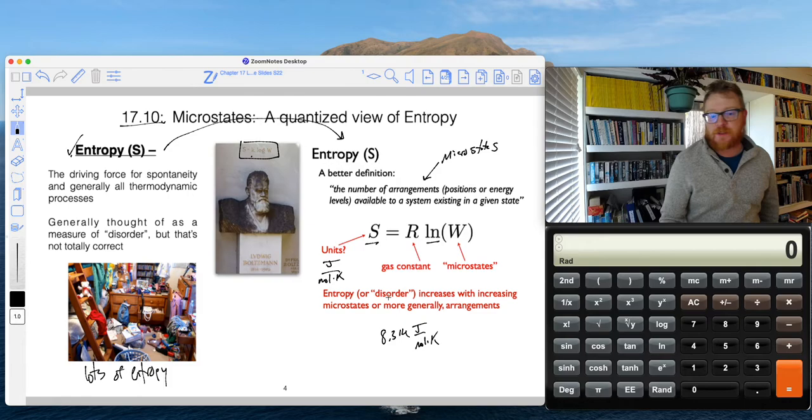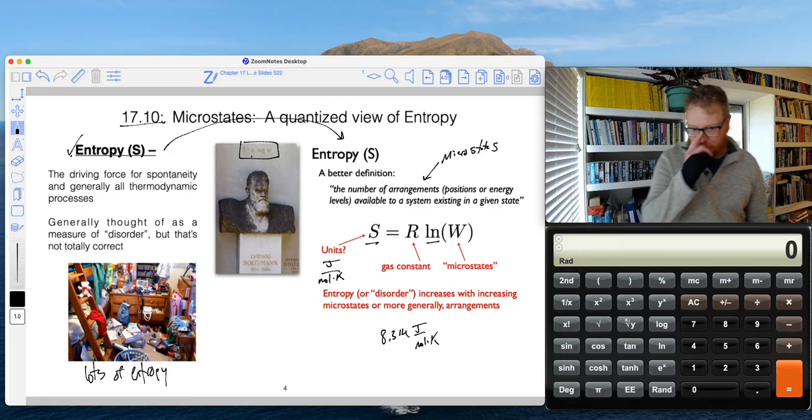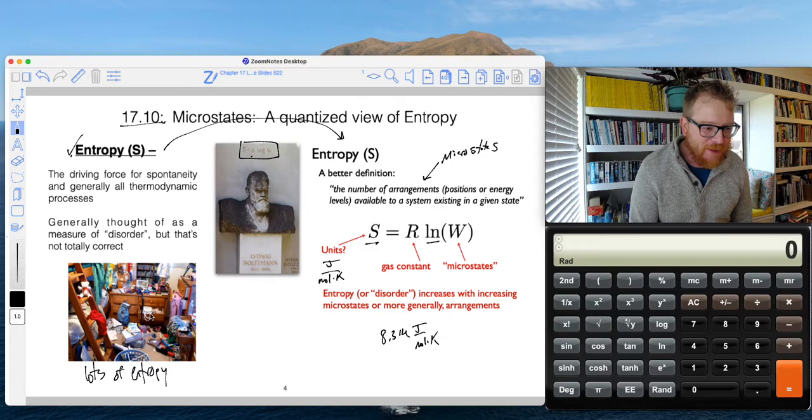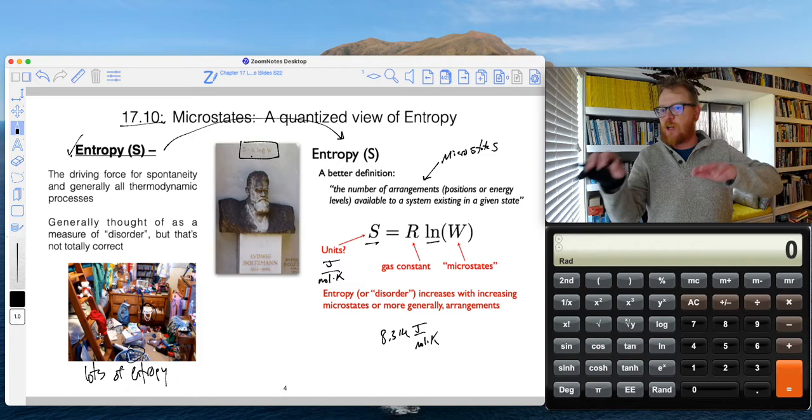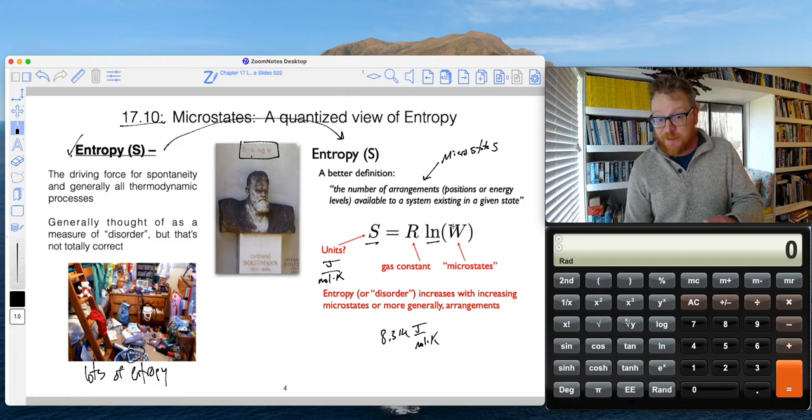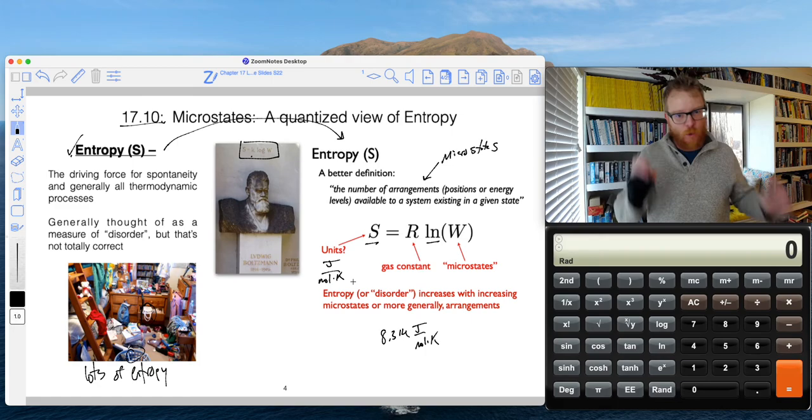And so hopefully what you gather from this equation, this entropy or this disorder, it's going to increase with increasing microstates or more generally arrangements. So if we kind of go back to this room here and we think of all of the ways we could arrange this random purse or whatever and this hanger and all this other junk that's sitting around in there, imagine just all of those different ways we could toss that stuff around the room. If we put that number into this equation, natural log of that number times R, that's going to give us a humongous value of S. And so that tells us lots of entropy, lots of disorder, if you will.